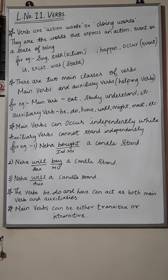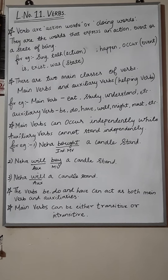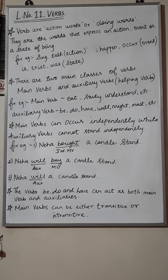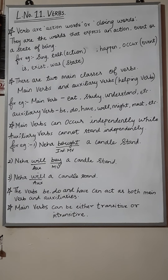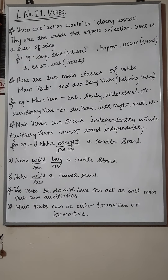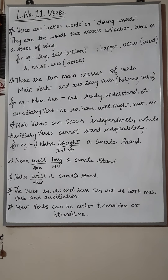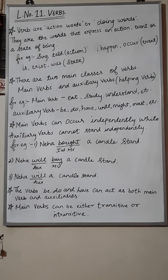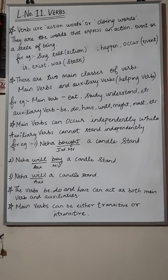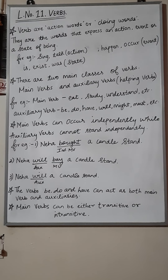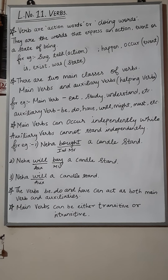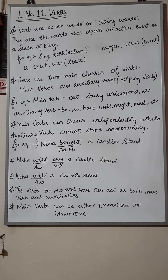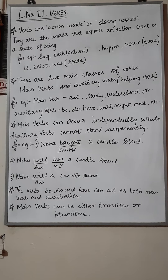Verbs are action words or doing words. They are the words that express an action, event, or a state of being. For example, 'talk' is an action word; 'happen', 'occur' are events; 'is', 'exist', 'was' express a state.